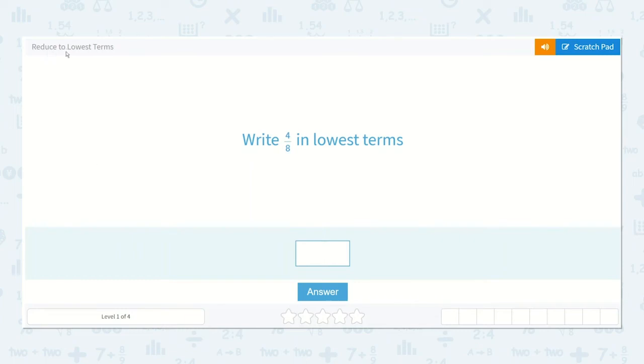Let's take a look at the lesson, Reduce to Lowest Terms. It says write 4 eighths in lowest terms.